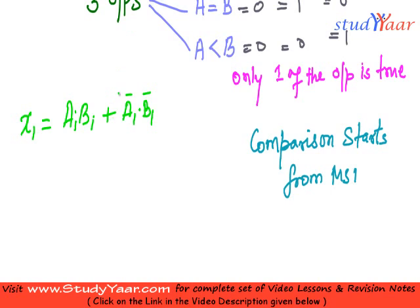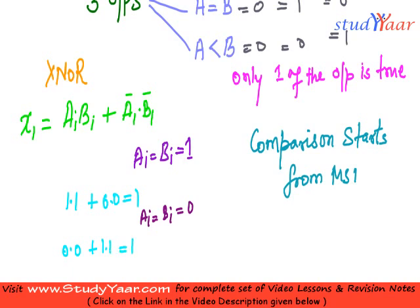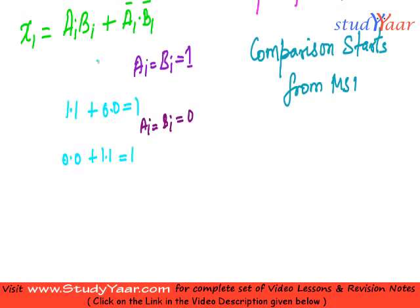So let's see what happens over here. Basically this is XNOR function. So when Ai is equal to 1 and Bi is equal to 1, what happens? What I get is 1 dot 1 plus 0 dot 0 which is equal to 1. Now what happens when Ai is equal to Bi is equal to 0? Then what I get is 0 dot 0 plus 1 dot 1 which is also equal to 1. So I can say whenever both the bits are same, I get the result of this function as true.